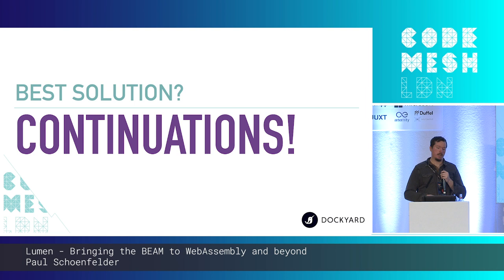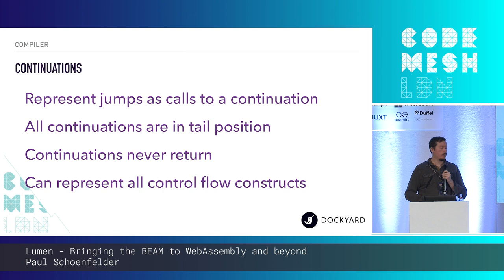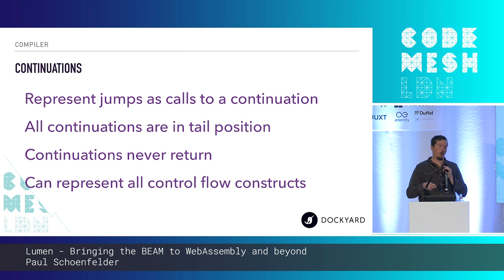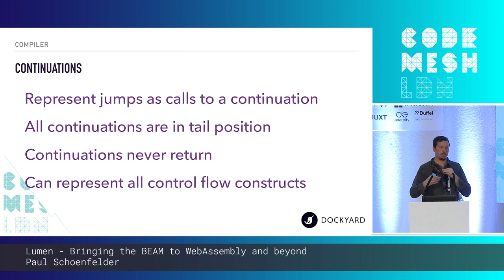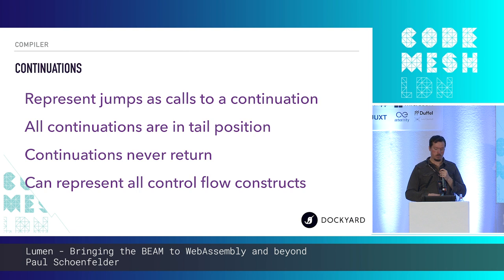My solution to this problem ended up being continuations, which sounds counterintuitive with tail call optimization being an issue. But because LLVM obeys special rules for TCO and guarantees it if you follow those rules, continuations actually work. Continuations basically represent any sort of jump as a call to a continuation — it looks like a function. Because they're all in tail position, if we know a jump is to a local function or local branch in the code, it can be lowered to that without being a full function call. Calling to a continuation never returns — you consider the rest of the execution of the program to be rolled up in this continuation. It's essentially a superset of all possible control flow constructs: exceptions, green threading, functions — they can all be represented this way.